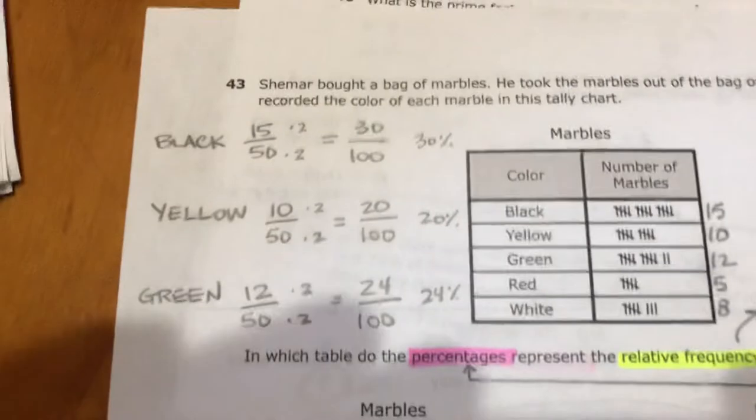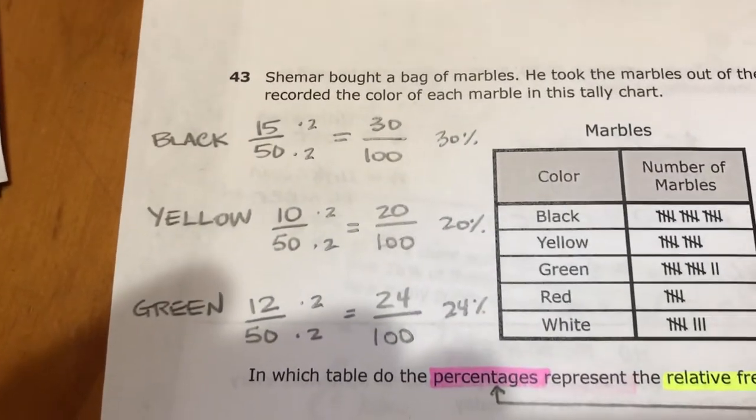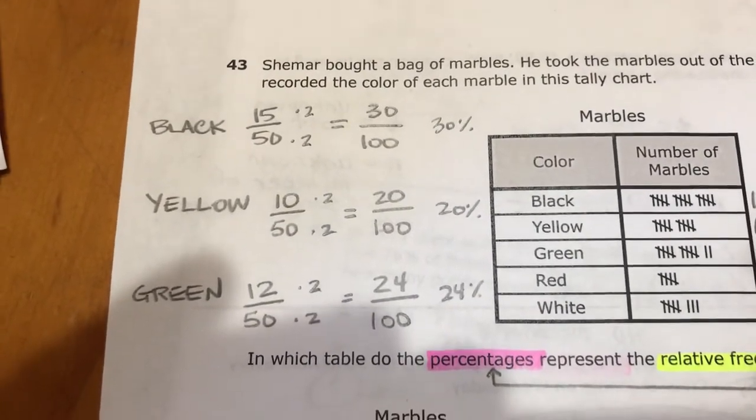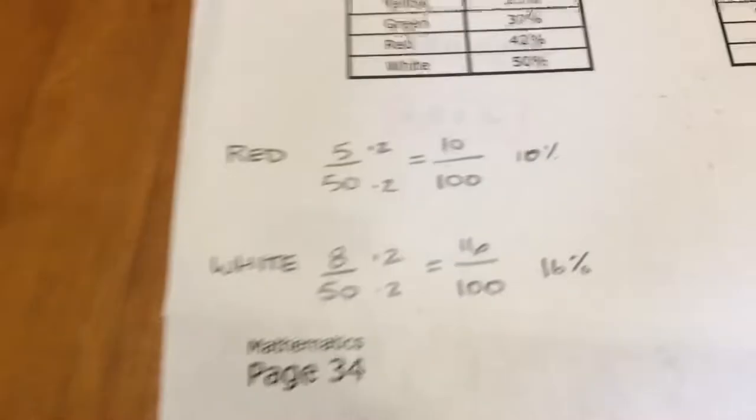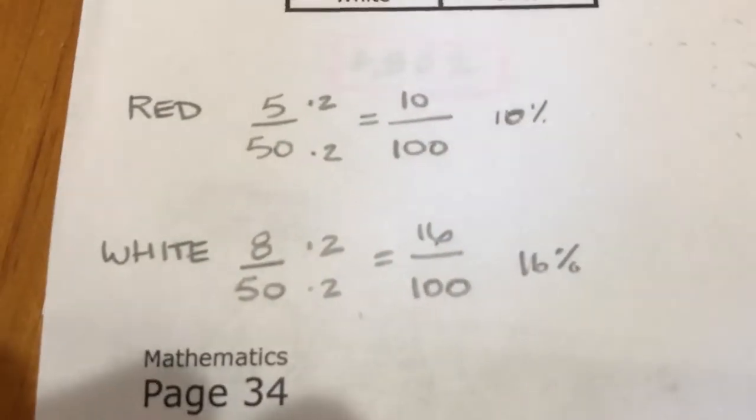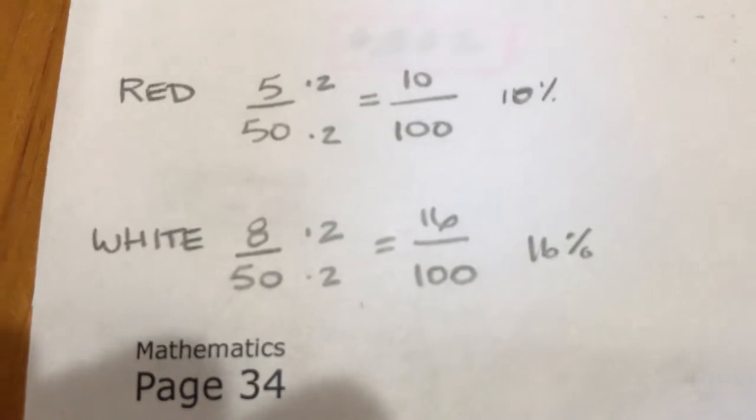So if you add up all these numbers you get 50. So black was 15 out of 50, and yellow was 10 out of 50, and so on. So I just took those fractions and changed them over to equivalent fractions that have 100 as the denominator so I could easily tell you the percent.